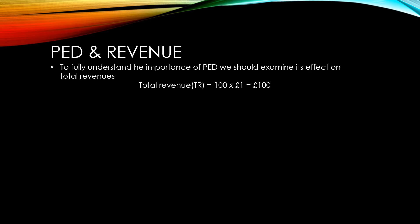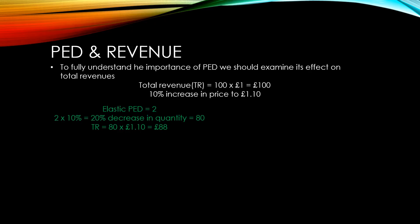Now let's consider the effects of a 10% increase in price from £1 to £1.10. If our muffins have an elastic PED of 2, the decrease in quantity demanded will be two times the amount of the increase in price, so 20%, or 20 less muffins will be demanded. We can see that if we sell 80 muffins for £1.10, we only make £88, so our total revenue has gone down.